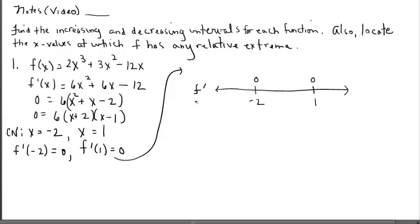From x equals negative infinity all the way up to negative two, the function is either all increasing or all decreasing. Between x equals negative two and positive one, the function is either all increasing or all decreasing. And past x equals one, the function is either continuing up or down. We have a basic understanding that this cubic graph is going up, dips down, and goes back up — so these should be positive slopes, then negative slopes, then positive slopes again. But we'll verify it with our first derivative test.